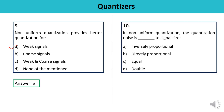Question 10: In non-uniform quantization, the quantization noise is — inversely proportional, directly proportional, equal, or double — relative to signal size? In non-uniform quantization, the quantization noise is directly dependent upon the signal size; whatever the signal value, the noise is related proportionally. The answer is B.